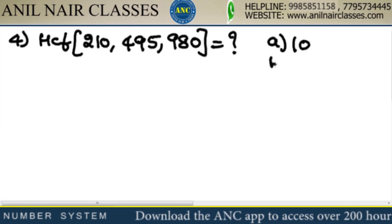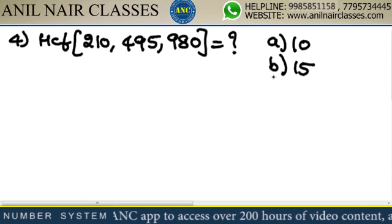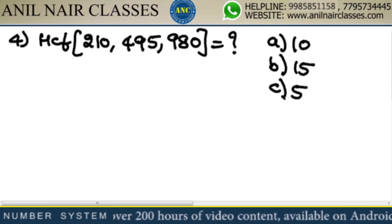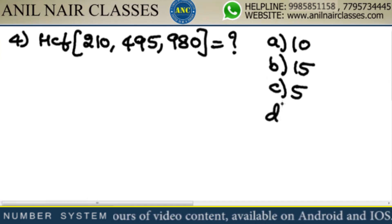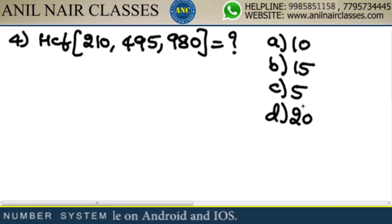HCF of 210, 495, 980. Please do not go by the traditional method — if you use the traditional method you are wasting your time. In my class we use optimal methods. See: HCF of 210, 495, 990.